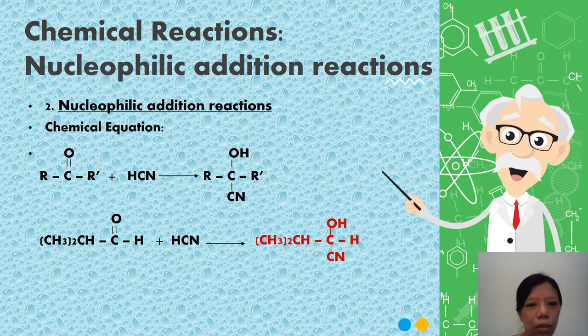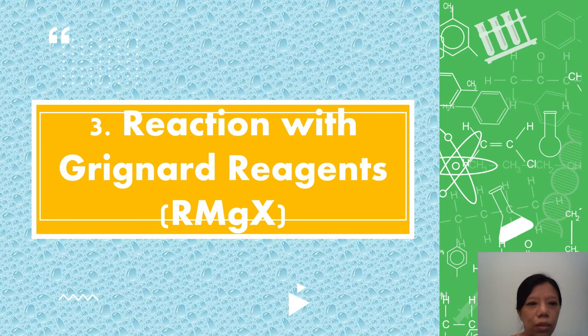Now we look at the chemical equations. Just write the carbonyl compound plus hydrogen cyanide and form the final product. This is an example. Add hydrogen and oxygen here and CN here.